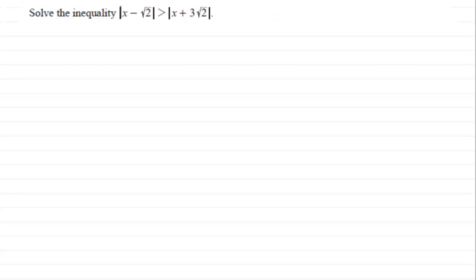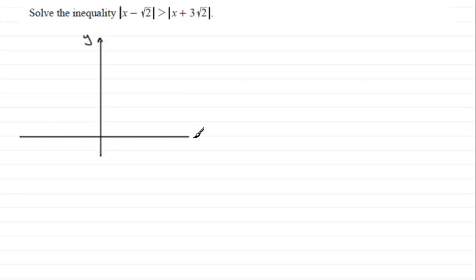Welcome back. To do something like this, what I would want to do is first of all draw a graph of each of the mod functions. So if we set up a y-axis and an x-axis, let's start by drawing the graph of y equals the mod of x minus root 2.